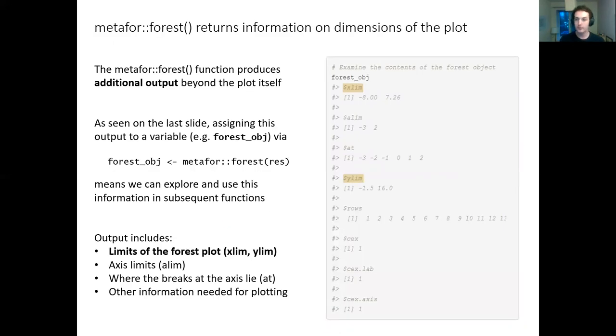What's important for what we're trying to do is that metafor forest also returns some information on the dimensions of the forest plot that's produced. By assigning the output to an object, in this case forest_obj, we can explore and use this information in subsequent functions. Most importantly for us, highlighted in yellow on the right hand side, the function provides information on the limits or the dimensions of the forest plot.